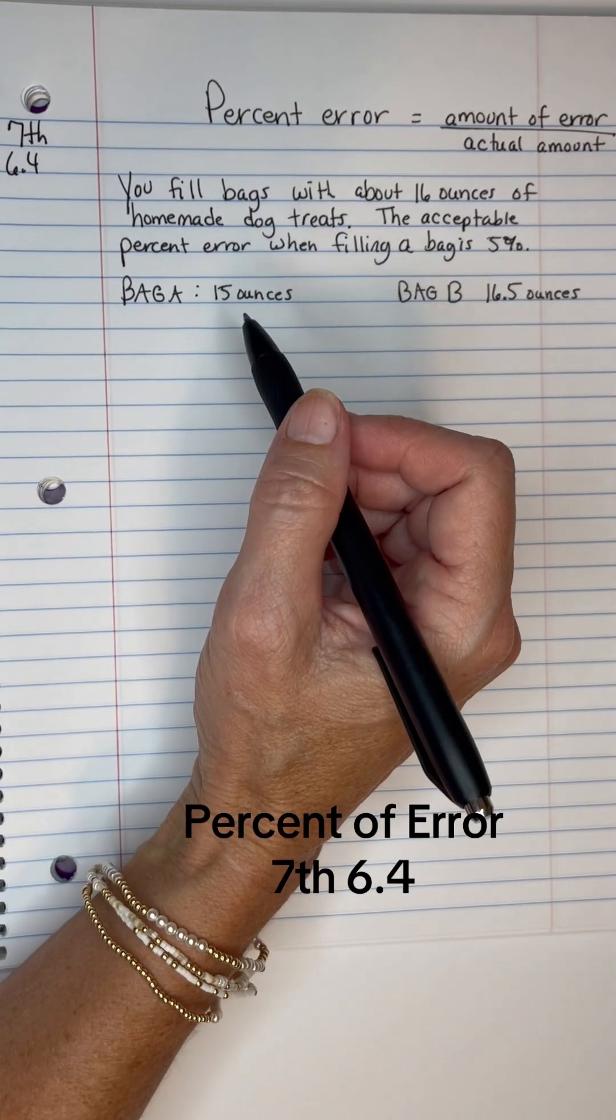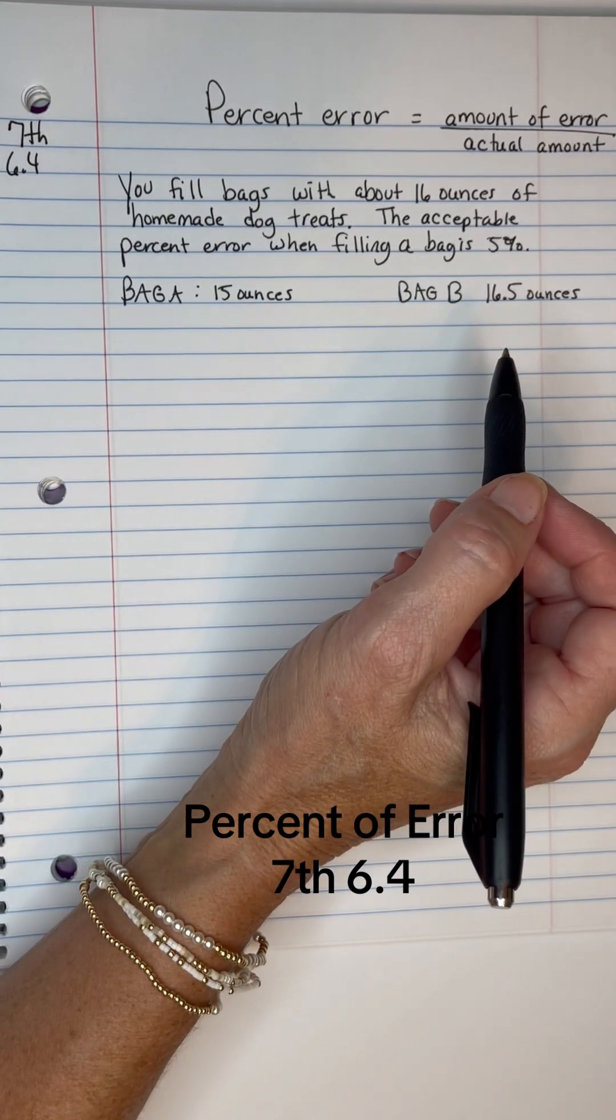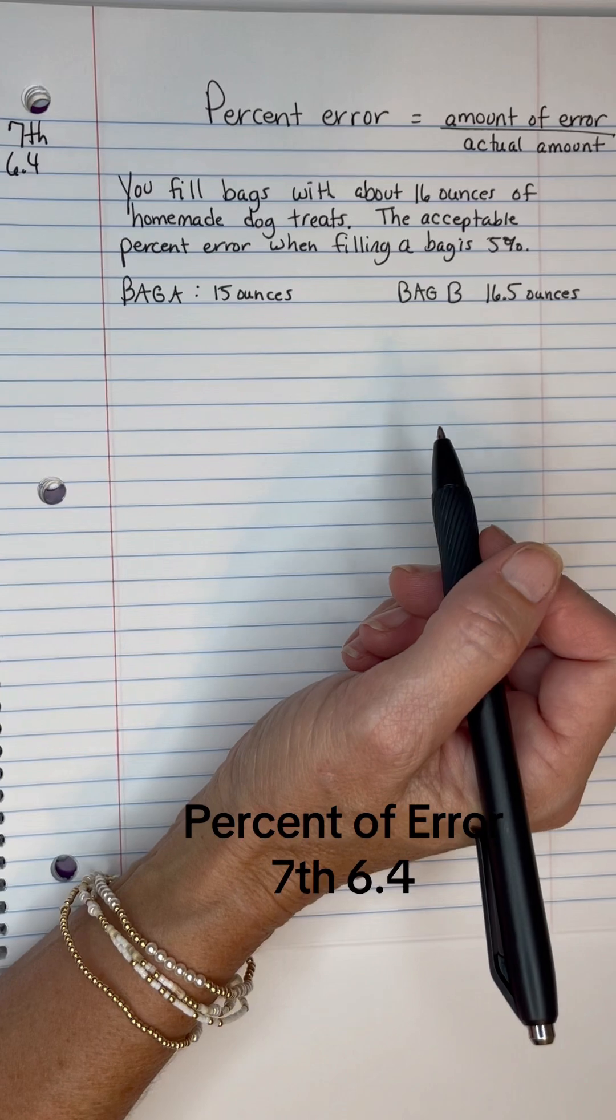I mean, not percent, ounces. Bag A has 15 ounces. Bag B has 16.5 ounces. Let's see if these bags are acceptable.